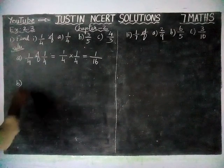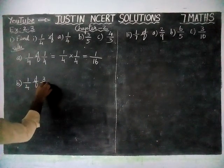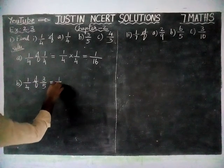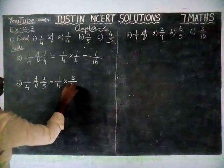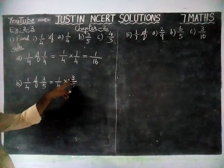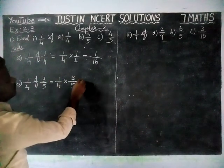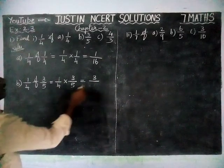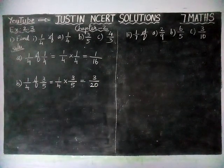Next, option B: 1/4 of 3/5 is equal to 1/4 into 3/5. Here also, we don't have any choices to simplify. So we multiply numerator into numerator: 1 into 3 is equal to 3, divide by 4 into 5 is equal to 20. So the answer is 3/20.